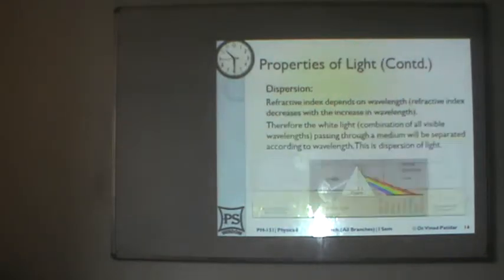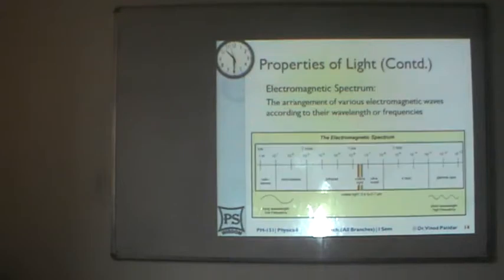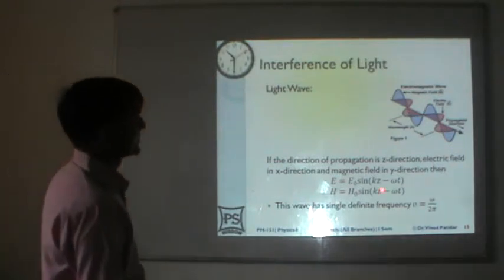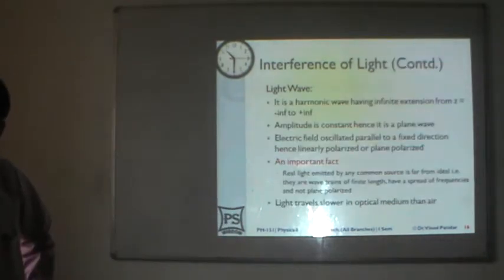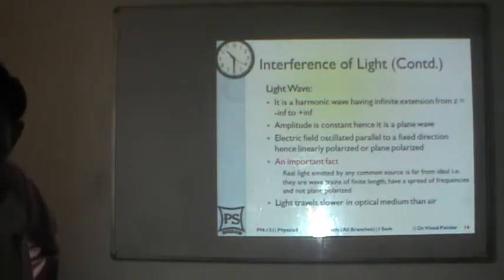Then we talked about dispersion. Dispersion is the separation of various wavelengths when light passes through a medium — this arrangement or distribution of light according to wavelength. We talked about the electromagnetic spectrum and gave a general description of an electromagnetic wave, including its various components: electric field, magnetic field, and the direction of propagation.